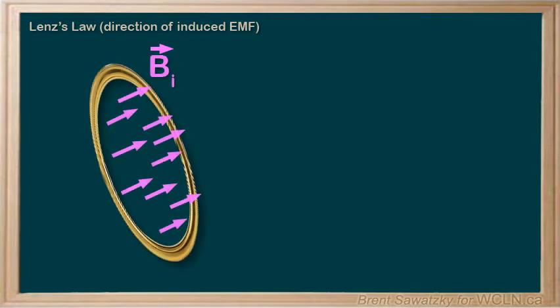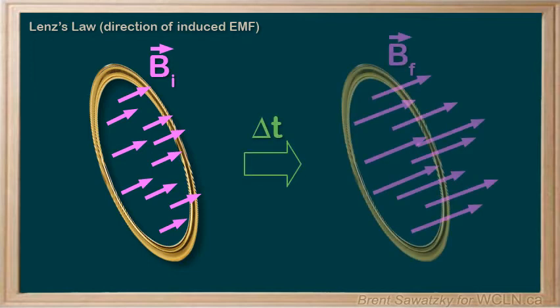Consider this conductive loop in a magnetic field. The magnetic field lines are shown in purple. And we recall that a loop sitting in a constant magnetic field like this has flux, but no EMF. We need a change in the flux to induce the EMF. So, let's give some time here, and we'll increase the magnetic field strength. We'll use longer magnetic field lines to indicate that BF is greater in magnitude than BI.